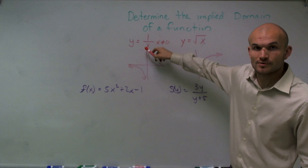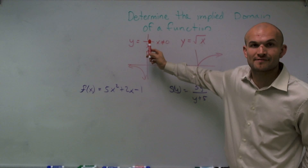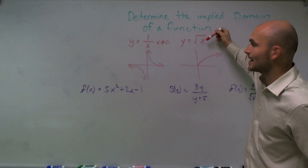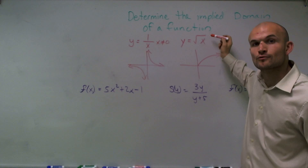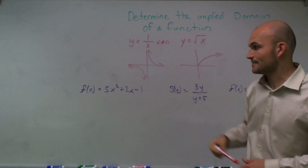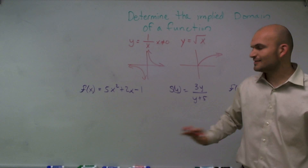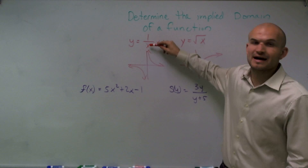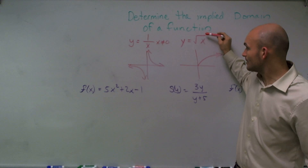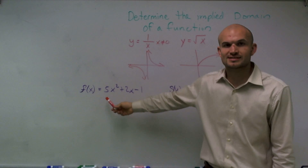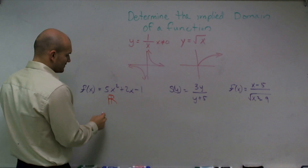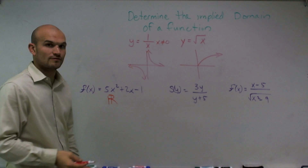Anytime I have a number that's going to be equal to zero on the bottom, that's not going to be a part of my implied domain. Or anytime I'm going to have a number that makes my radical — my even root — negative, that's not going to be part of my domain. So if I look at this first function, am I dividing by any number that could be zero? No. Am I going to be taking the root of any number? No. This is just a simple quadratic function. So therefore, the implied domain for this is all real numbers, negative infinity to infinity.